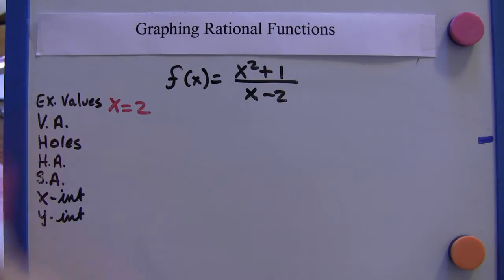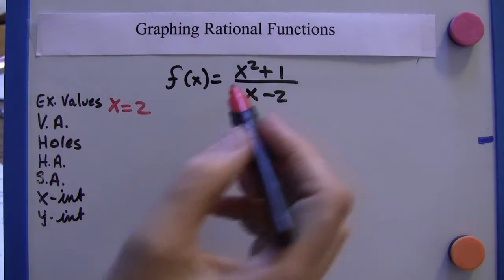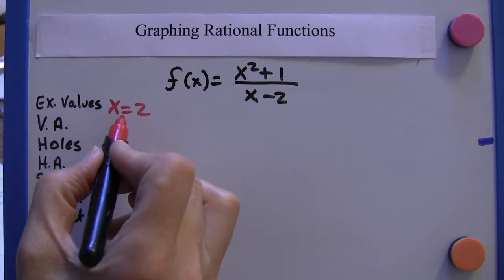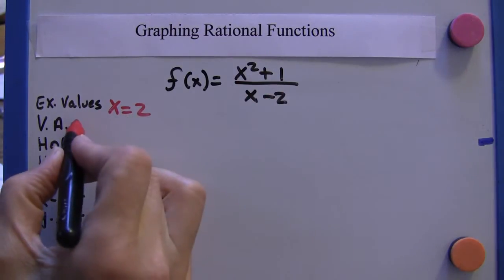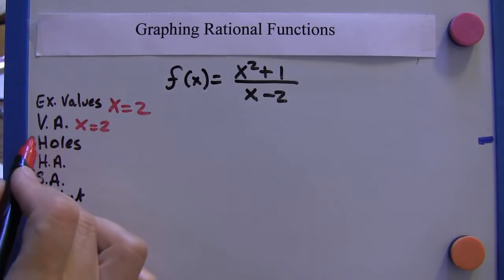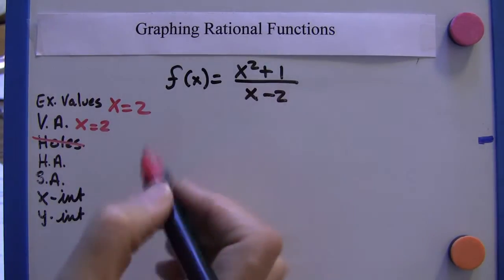We want to look for vertical asymptotes. Well, since this is an excluded value, this would be a good place to start, and we didn't reduce anything out. We know there's a vertical asymptote at x equals two, and there are no holes. Again, we didn't reduce anything out.